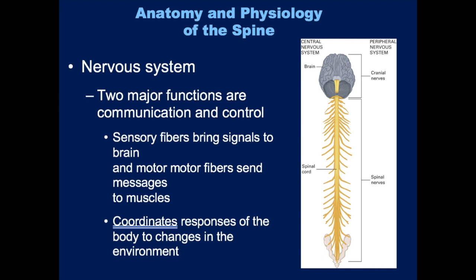You can divide the structure of the nervous system into two main divisions. You have the central nervous system, which consists of the brain and the entire spinal cord. And then you have the peripheral nervous system, which consists of all of the other nerves located outside of the brain and the spinal cord.